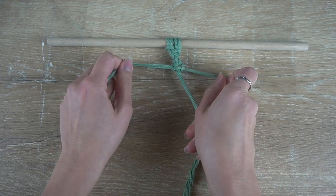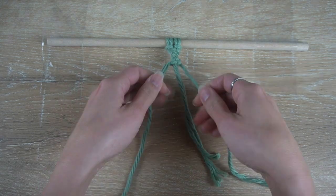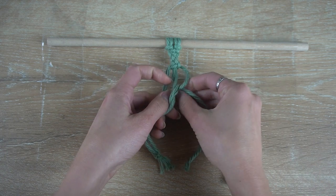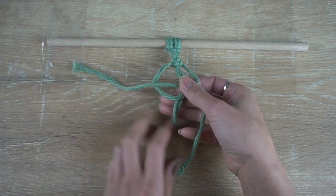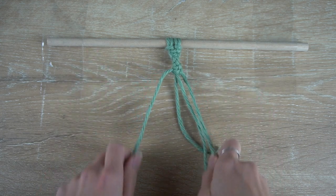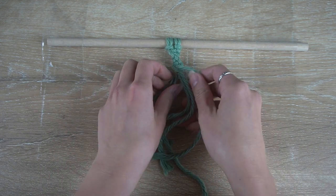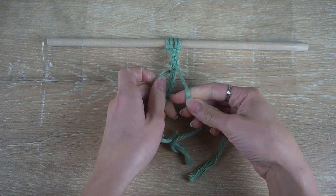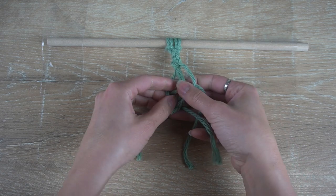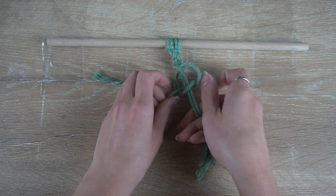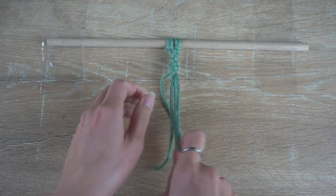You can make a thicker half knot spiral. To do that, all you need to do is use more filler cords than the two that we have used here. The two working cords used to make these half knots have to be much longer than the filler cords in the middle, as those are the cords used to make the knots.